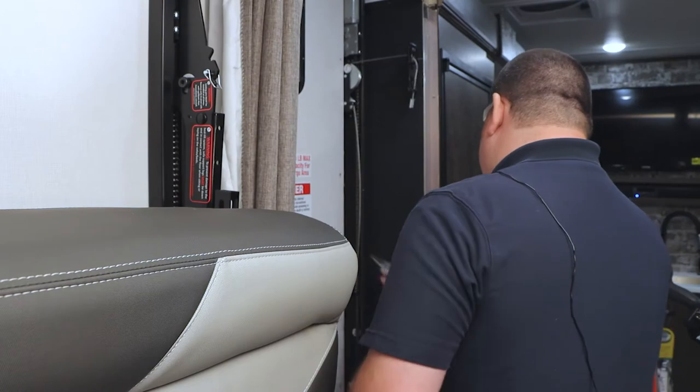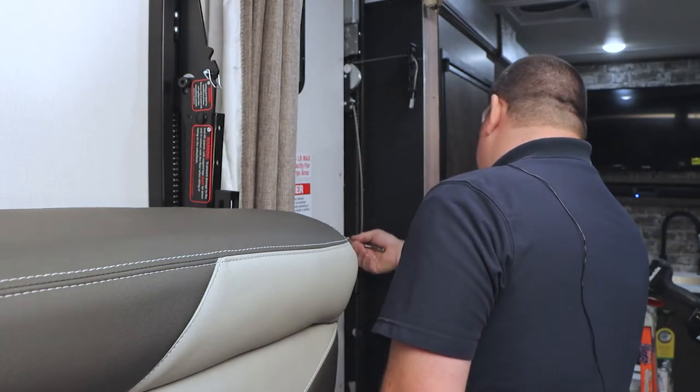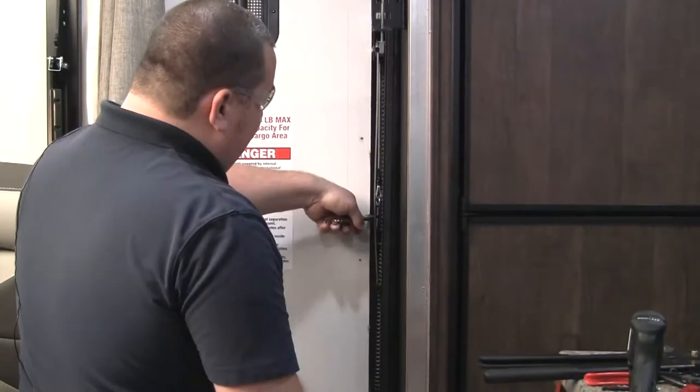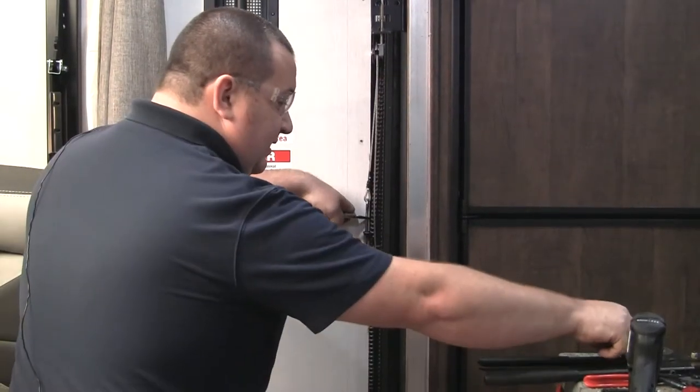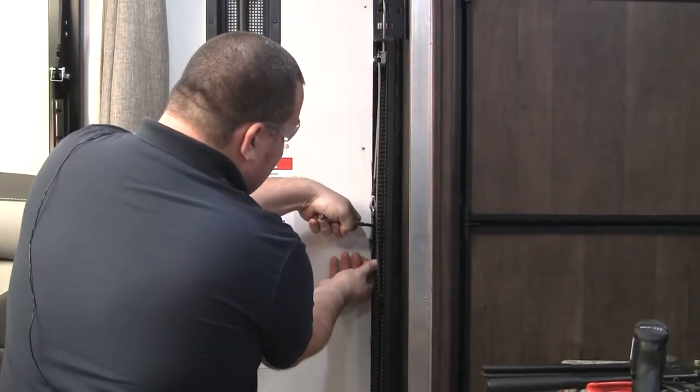Once your measurements match from top to bottom on the outside, what I do is I grab that eye bolt and I pull it out and at this point we're going to put the jam nut on.